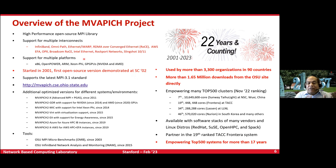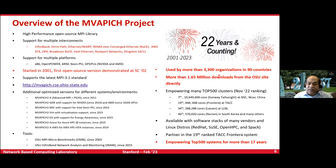We first demonstrated this MPI library at Supercomputing '02, almost 22 and a half years back. Since then, we've expanded from InfiniBand to all different high-performance networking: Omni-Path, iWarp, RoCE, AWS EFA, OPX, Broadcom, Intel Ethernet, Rockport Network, and Slingshot 10/11. I'm very proud of my team — we've been working on this project for almost 22 years. More than 3,300 organizations have been using our software in 90 countries, and just from our website we've crossed 1.65 million downloads. Our stack is also part of Red Hat and OpenHPC, and it has been empowering top 500 clusters for the last 17 years.